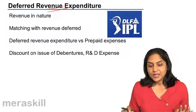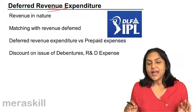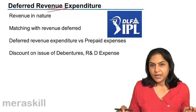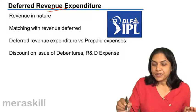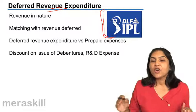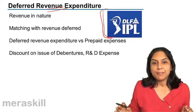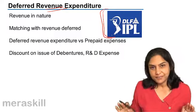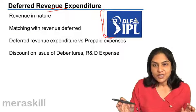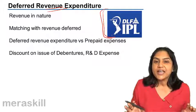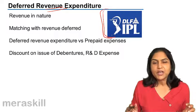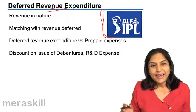Let us say there has been a heavy spend on advertising. An example could be the DLF IPL, where DLF has paid a lot of money in order to host the IPL for the next, let us say, five seasons. What is the nature of this expenditure? It is advertising. Advertising normally is a revenue expenditure — it is an expense because it is recurring in nature.